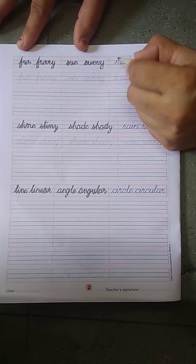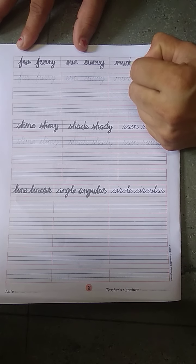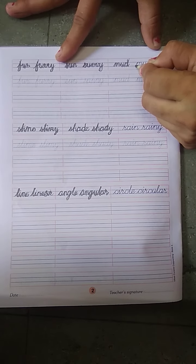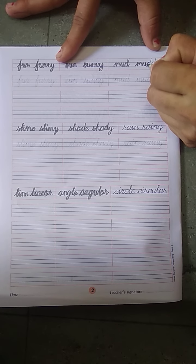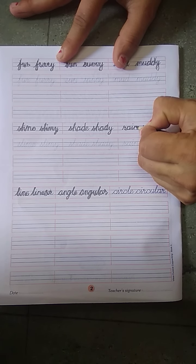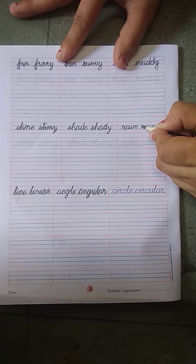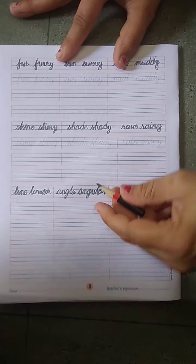Then M, U, D. Muddy. Muddy. Then R, A, I, N. R, A, I, N, Y. Rain and rainy.